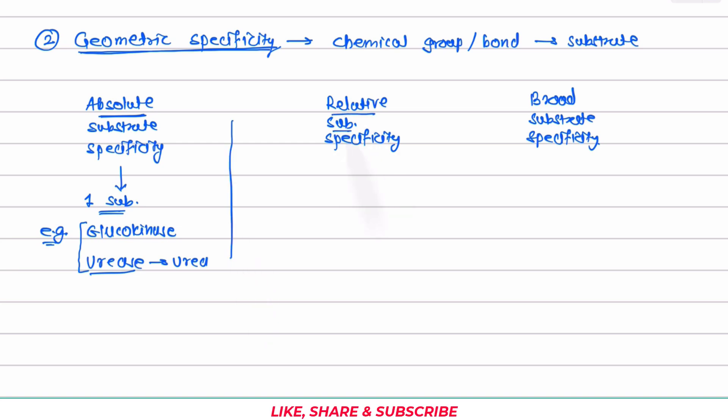The second one is the relative substrate specificity. Here enzymes are little bit more permissive. Here enzymes are specific to group, they are specific to group or bond present in the substrate. Just to understand more, let's look at the example.